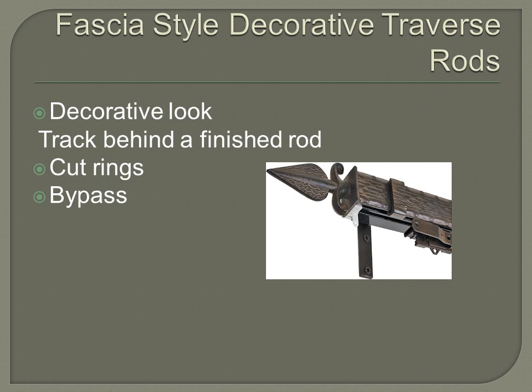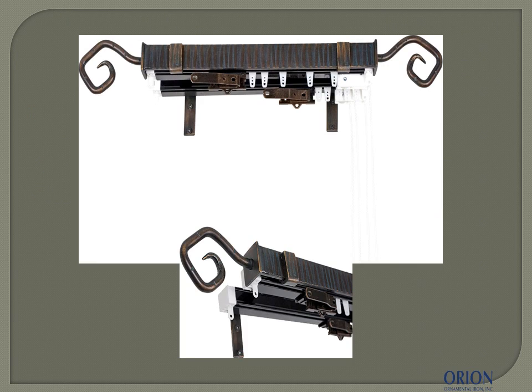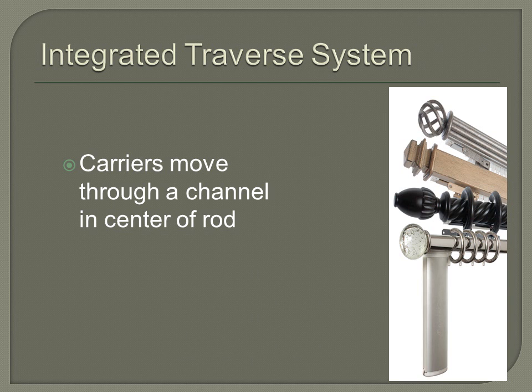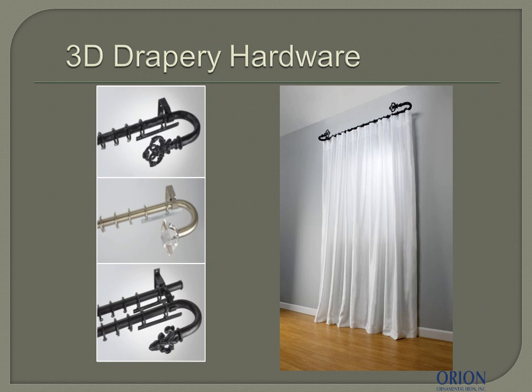You might also consider fascia traversing systems — a decorative look with a track behind a finish rod. You can use C or cut rings, bypass rings, or a functional track. These slides and tracks are now available in several colors. You can also do an integrated traverse system where carriers move through a channel in the center of the rod, available manually with or without rings or motorized. Consider 3D hardware for a wall-to-wall scenario where you still want a decorative finial — the rod is bent back onto itself so you see the finial in profile.